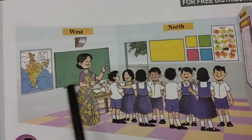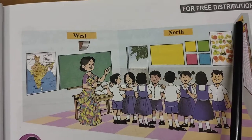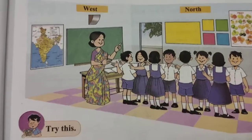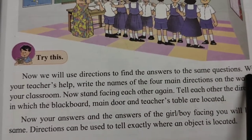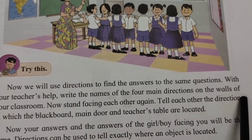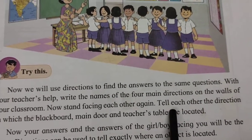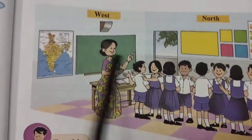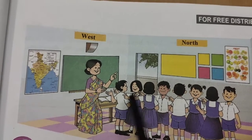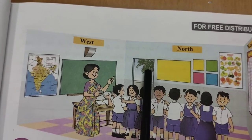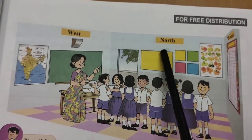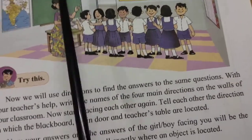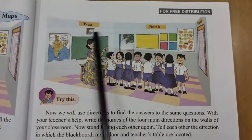Now see this picture — here it is written North, East, and West. The children are facing each other. Now we will use directions to find the answers to the same questions. With your teacher's help, write the names of the four main directions on the walls of the classroom. The blackboard is on the West side, the door is to the North, and the teacher's table is to the East. Opposite to North is South, and opposite to East is West. So there are four main directions: East, West, North, and South.